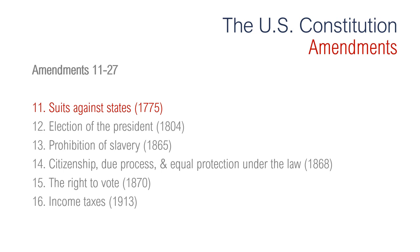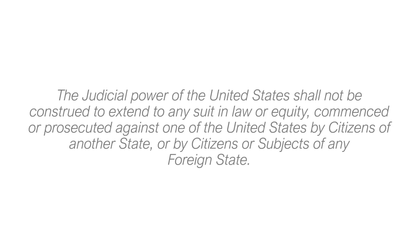We've finished with the Bill of Rights. Now we're moving on into the rest of the amendments of the Constitution — Amendments 11 through 27. Amendment 11 is regarding suits against states, passed in 1795. The Eleventh Amendment says the judicial power of the United States shall not be construed to extend to any suit in law or equity commenced or prosecuted against one of the United States by citizens of another state or by citizens or subjects of any foreign state. This amendment has been interpreted to mean that a state cannot be sued in federal court by one of its own citizens, by a citizen of another state, or by a foreign country.